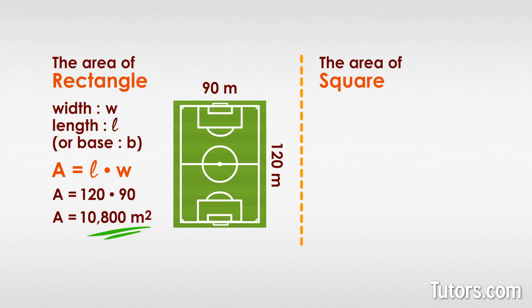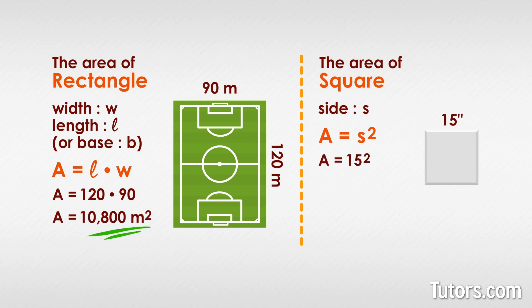The formula for a square with a known side, s, is even easier than writing out length times width — it's just a equals s squared. Here is a square with sides 15 inches long, the same size as the bases on an MLB baseball field. What is its area? We plug in our number 15 for s, do the math, and we get a equals 225 inches squared.